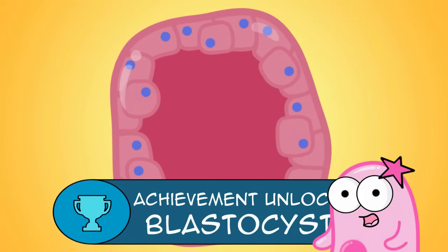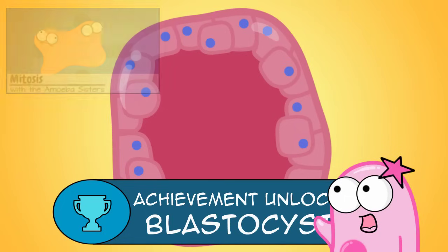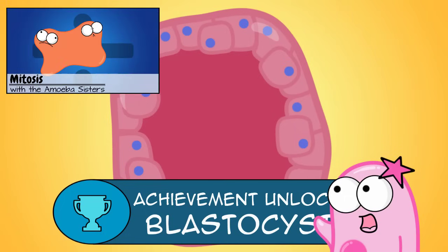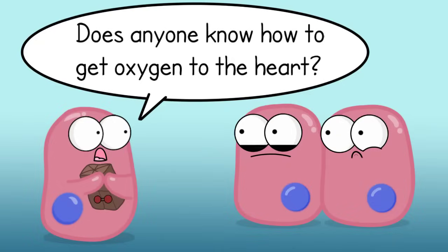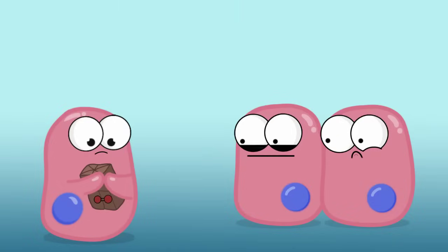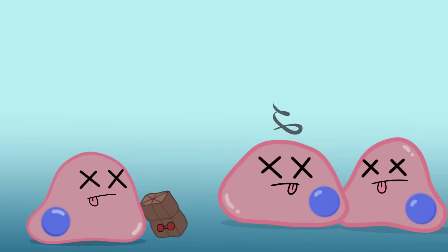The problem is, if the cells just keep dividing — if you remember from our mitosis video, that makes identical cells. That's great for growth, and so dividing is definitely going to happen, but that alone is not going to result in different specialized cells with different specialized functions. There's something else that will be happening for that.